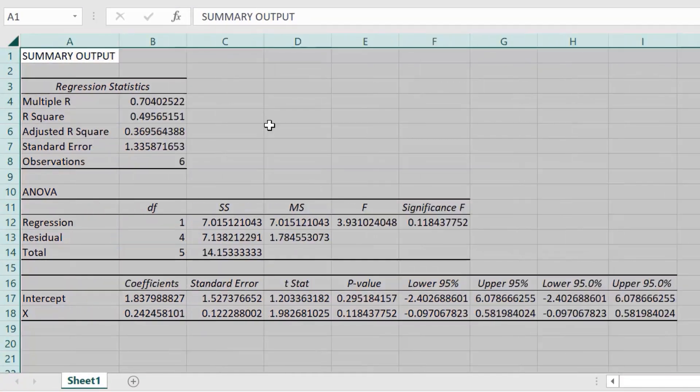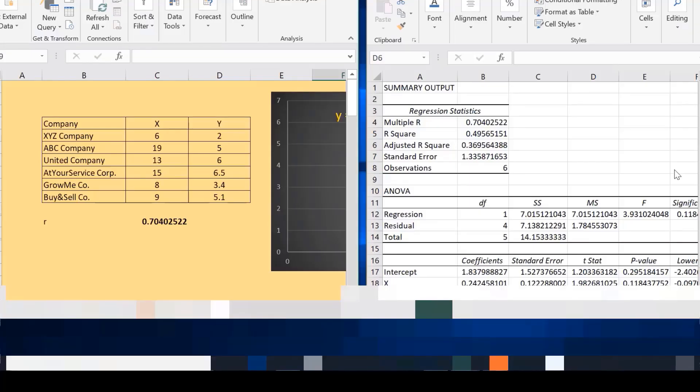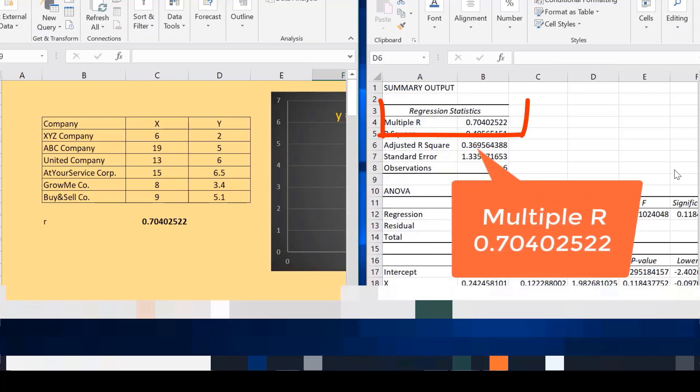A new Excel workbook is created showing the analysis. Adjust the column width to see all the results properly. Let's put the two workbooks side by side.